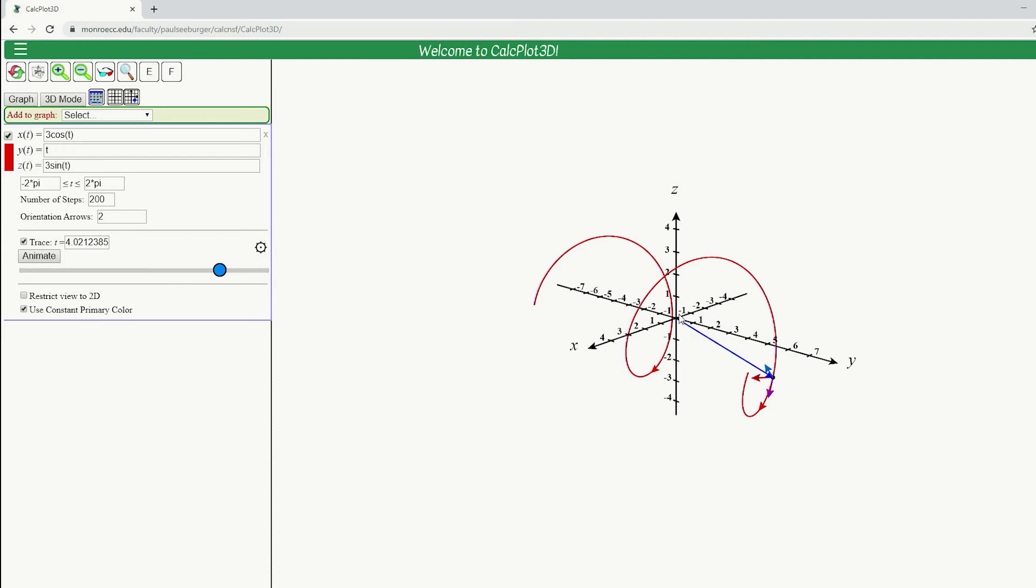So similar to the way your IJK vectors at the origin, with their tail all at the origin, form this mutually orthogonal frame of unit vectors, which generate these XYZ axes, you can also think about this TNB frame like this traveling coordinate system along that curve.